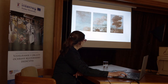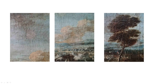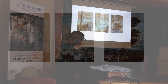Tady vidíme další detaily z těch oblaků, kde byly různé tmely, retuše, doplňky. Vidíme i v detailnějším obrázku krakeláž, oddělující se barevnou vrstvu od podkladů, zažloutlé vrstvy laků, různé doplňky.